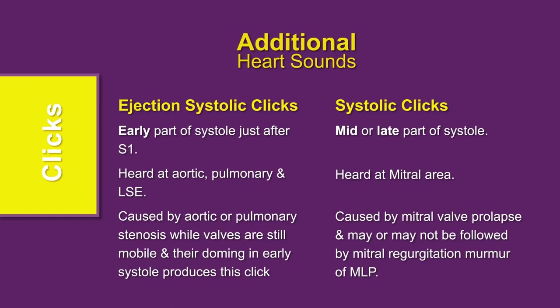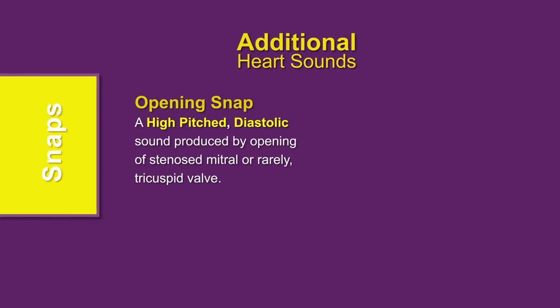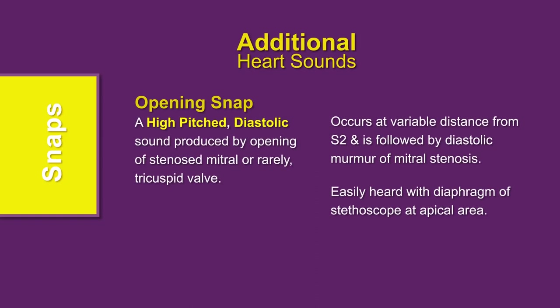Now, snaps. There is one sound in this subcategory, known as the opening snap. This is heard in mitral stenosis and is a high-pitched, diastolic sound produced by the sudden opening of the stenosed valve. It can occur at a variable distance from S2, and is followed by a mid-diastolic murmur of mitral stenosis, heard easily in the mitral area with the diaphragm of the stethoscope.